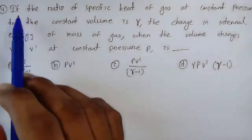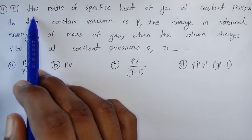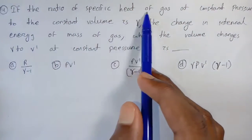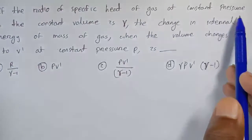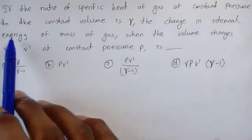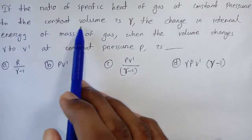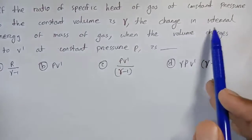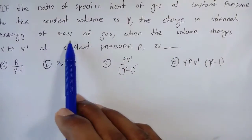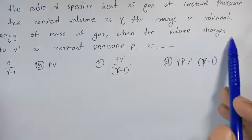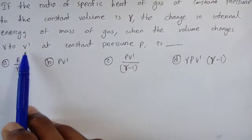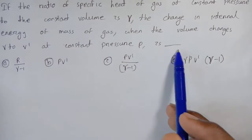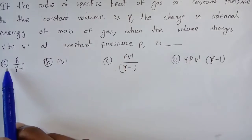Hello everyone. The question is: if the ratio of specific heat of gas at constant pressure to constant volume is gamma, find the change in internal energy of a mass of gas when the volume changes from V to V' at constant pressure P.